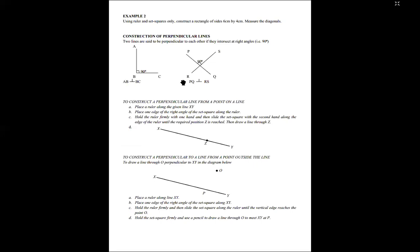Now our focus is to construct perpendicular lines. Two lines are said to be perpendicular to each other if they intersect at right angles — that is, they intersect at 90 degrees. Below are two figures of intersecting lines. The first figure shows two lines AB and BC intersecting at 90 degrees or at a right angle. Here is a symbol to show that two lines are perpendicular.